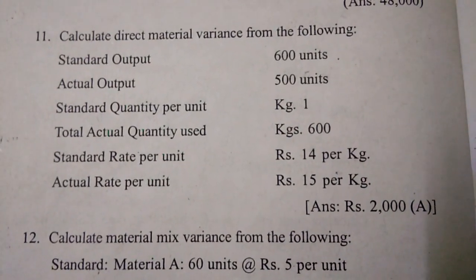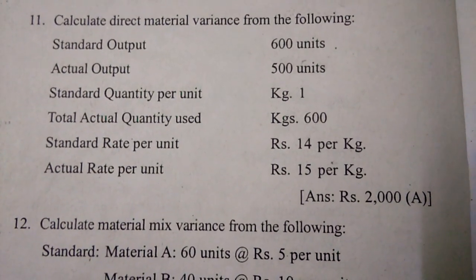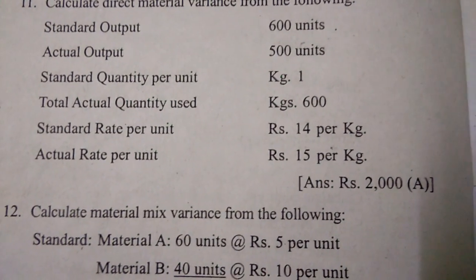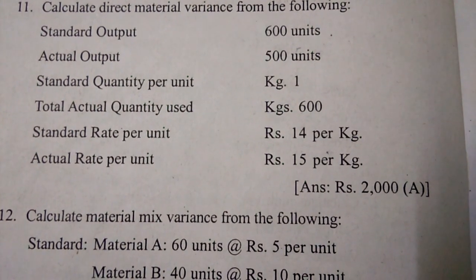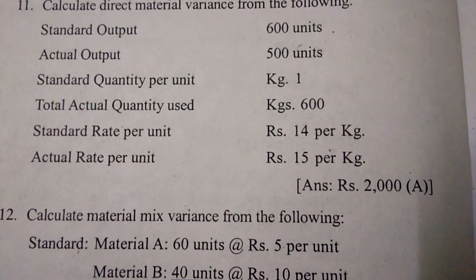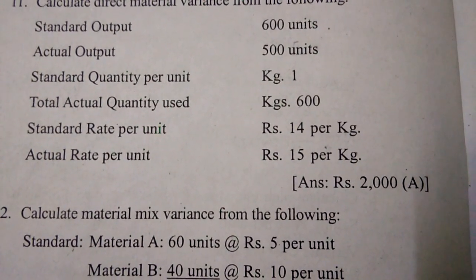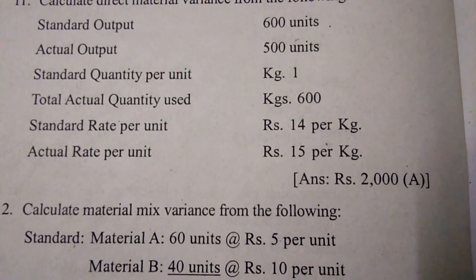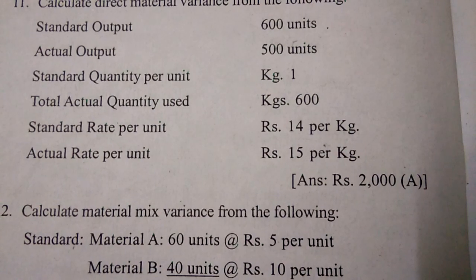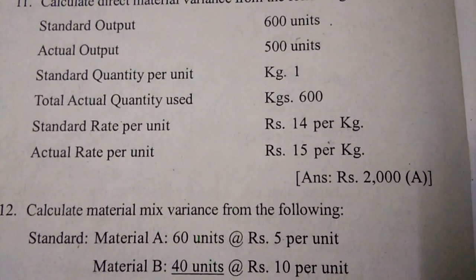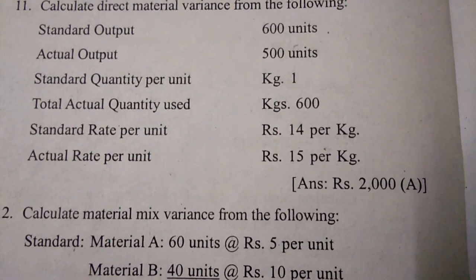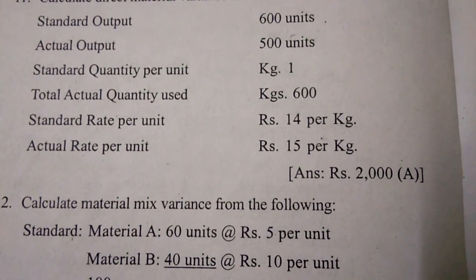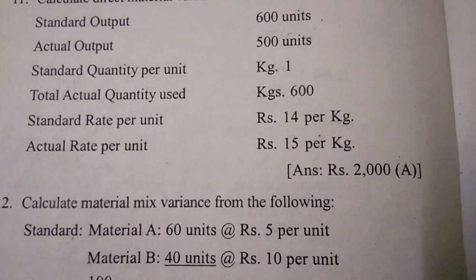Calculate the direct material variance from the following: standard output 600 units, actual output 500 units, standard quantity per unit 1 kg at 1 rupee, total actual quantity used 600 kg, standard rate per unit 14 rupees per kg, actual rate per unit 15 rupees per kg — answer is 2,000 rupees.